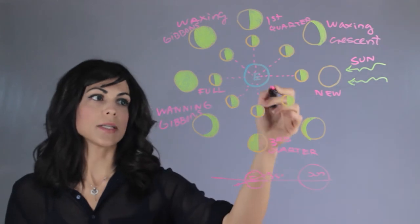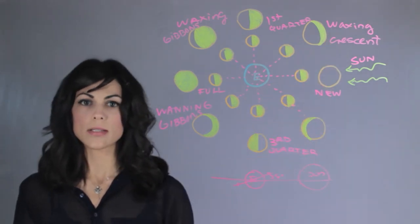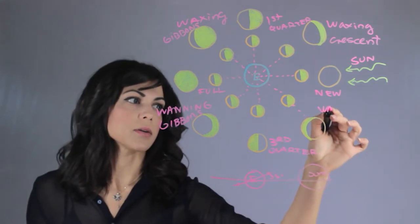And the same thing happens with the last one. So it's symmetrical, exactly like the waxing crescent, but it's on the other side. And this is the waning crescent.